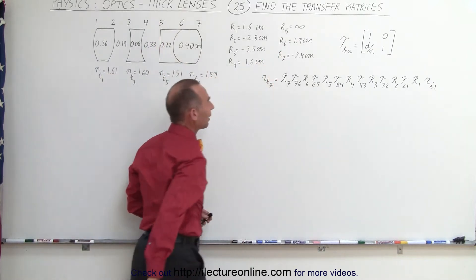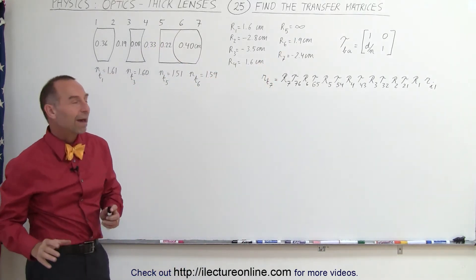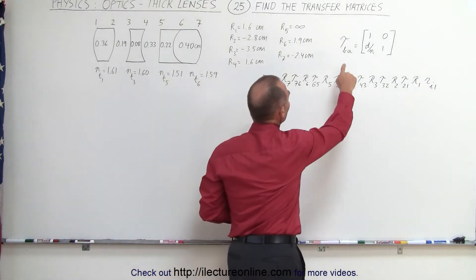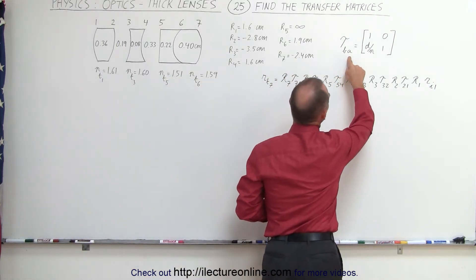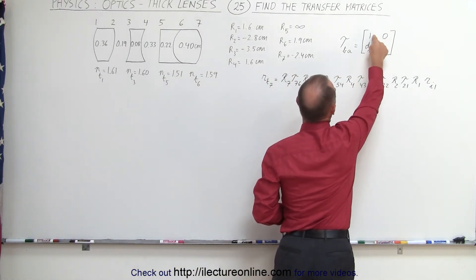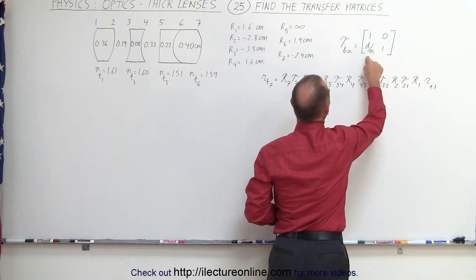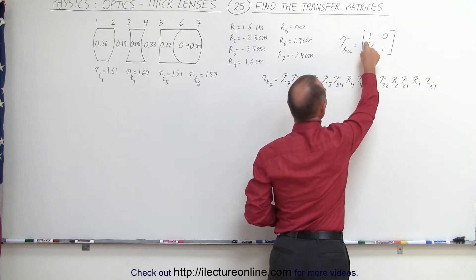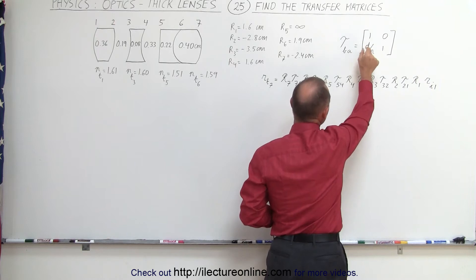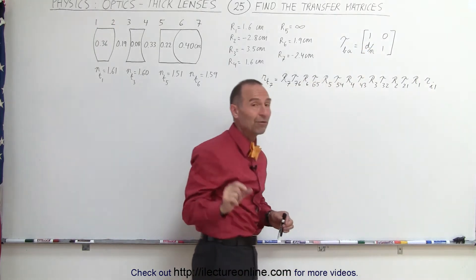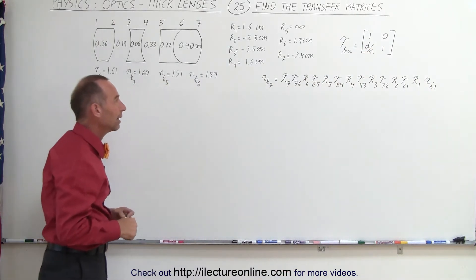We also have the general equation of the transform matrix from B to A, knowing that we have a zero here, two ones across the diagonal, and in the left corner here we have the thickness of the either lens or air gap divided by the index of refraction of that lens or that air gap.